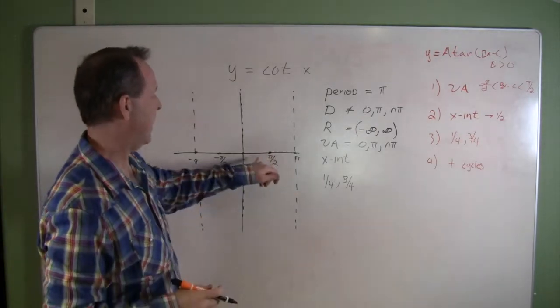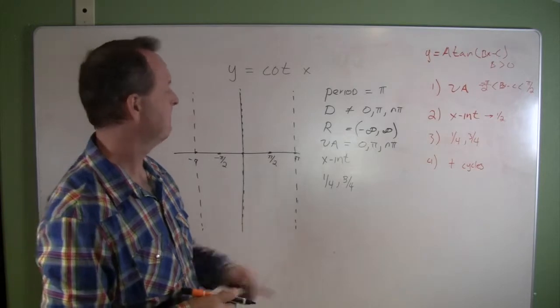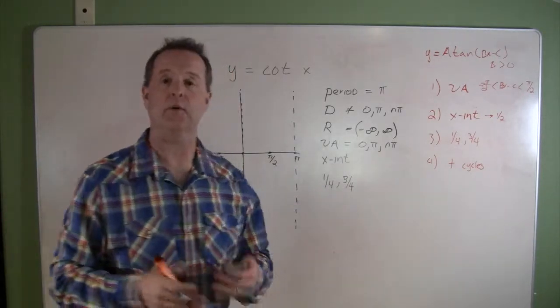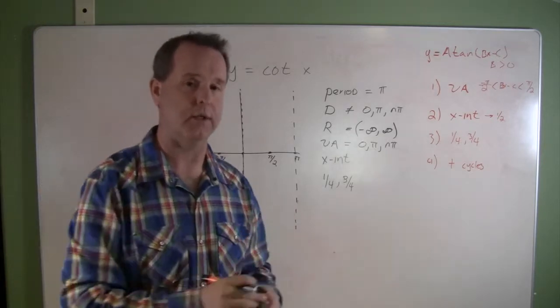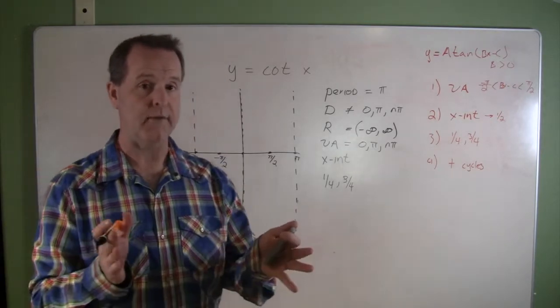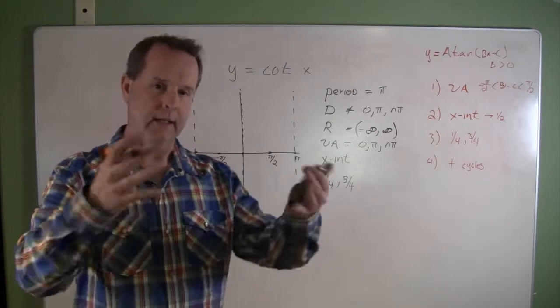The next thing we want to look for is what's happening a quarter of the way through the period and three-quarters of the way through the period. We already found out what's happening halfway; let's find out what's happening at those quartile positions.